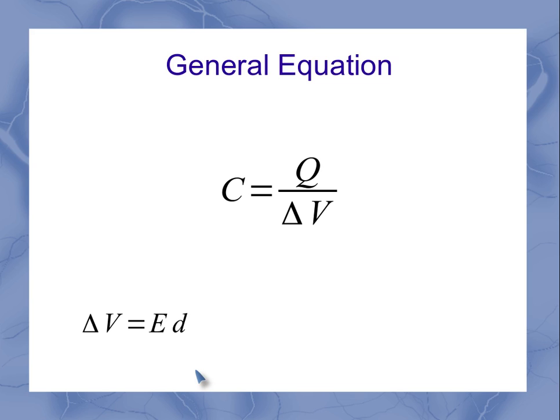And if I substitute that into the equation, I have Q over Ed. Well, the electric field from Gauss's law, I could figure that out as being sigma over epsilon naught, where sigma was the surface charge density.